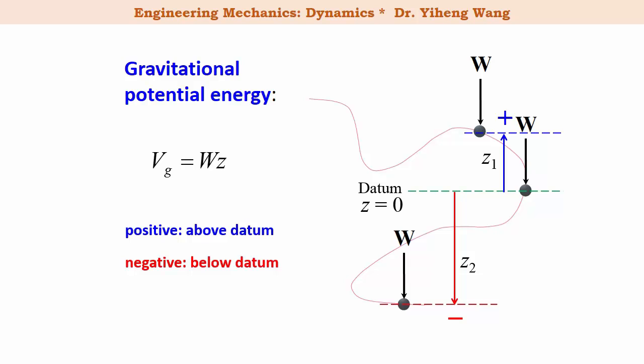As you will quickly notice, the value of this potential energy will change if you change your datum. That is correct. But as I said, the absolute value of the potential energy is not of interest. What's more important is the difference of the potential energy due to the change of the particle's location. Through a quick analysis you will find that no matter how you choose the datum, the difference in the potential energy will stay the same for the state change for the particle.